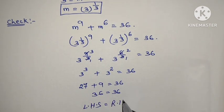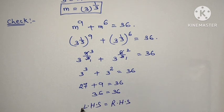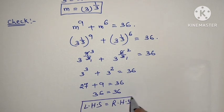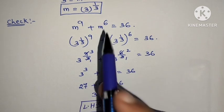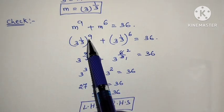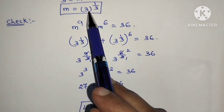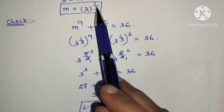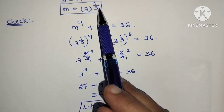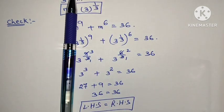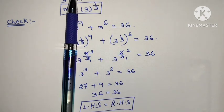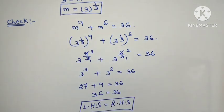The value of m is equal to 3 to the power 1 by 3. Thank you everyone. Subscribe to my channel to see this type of video. Thank you.